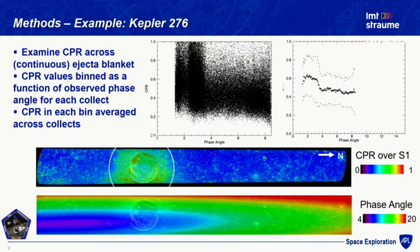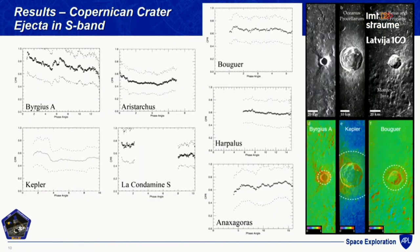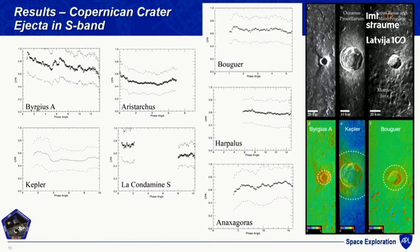We've done that for all of the different collects that we have. When we have multiple collects of a crater, we average them together to get a curve that covers a wider phase space. This is where we were several months ago — you can see a wide variety of behaviors. For some craters we see what looks like a very clear opposition effect: Aristarchus turns up very nicely at low phase angles. Burgess A, which we know is a very young crater, has some indications of a similar upturn. Kepler is a little strange — we have flat behavior at large phase angles and then another flat region at higher values at lower phase angles, so maybe an opposition effect, but maybe something a little different. There are some indications that Lecondamine S is similar, so we're seeing lots of different behaviors as we examine the ejecta of all these different craters.